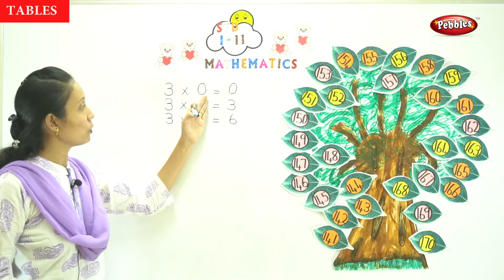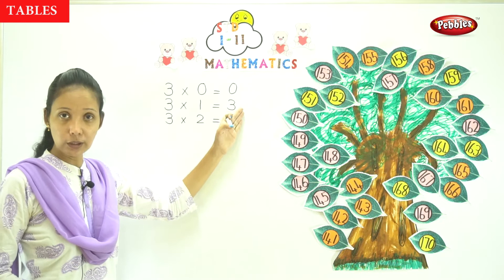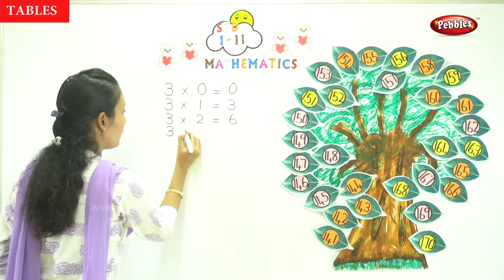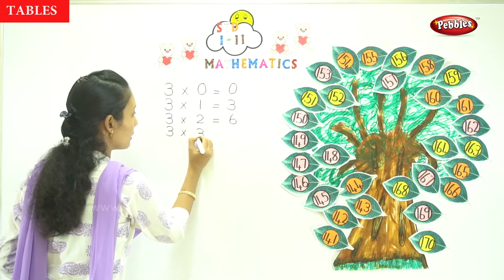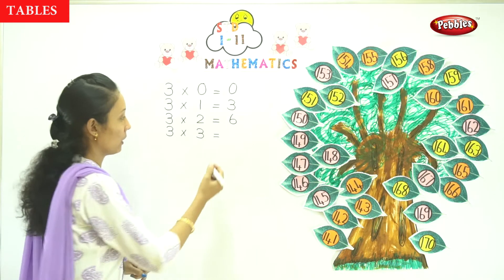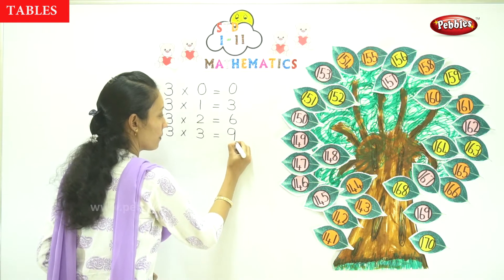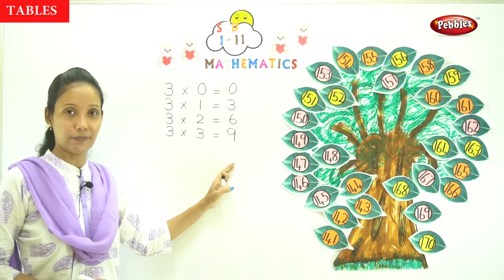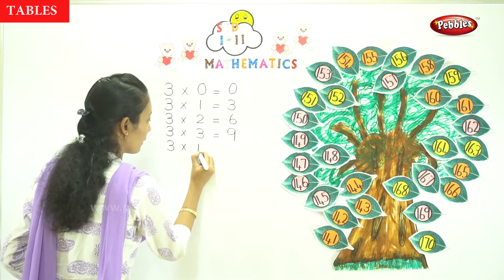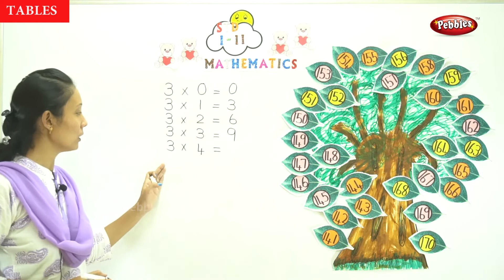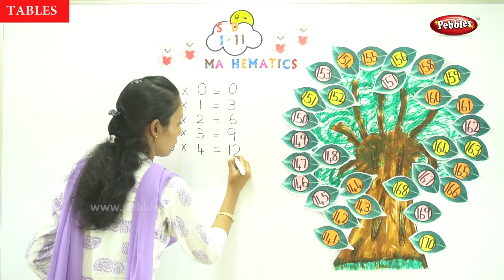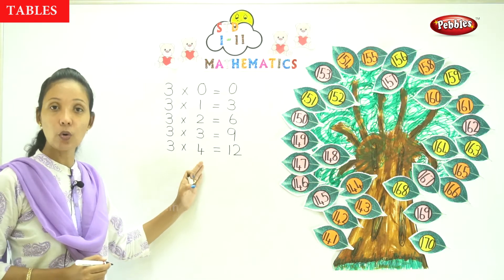3 into 0 equals 0. 3 into 1 equals 3. 3 into 2 equals 6. Now 3 into 3 — 3 times 3. That is correct. And 3 into 4 equals 12. It is 12. That is 3 into 4 is equal to 12.